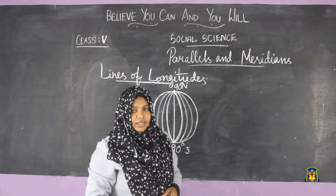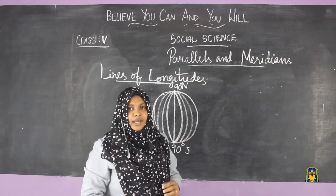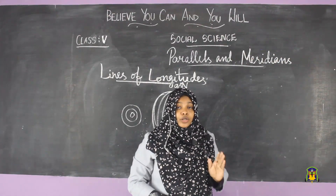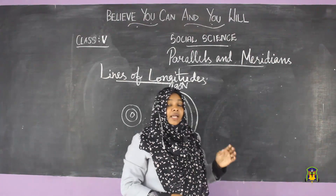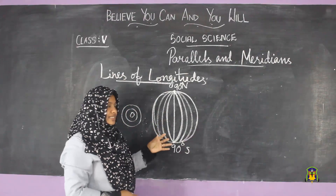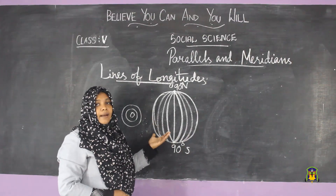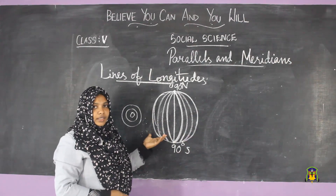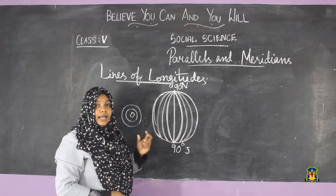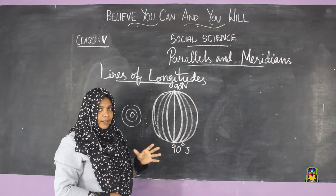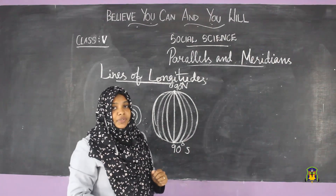The third fact: longitudes do not run parallel to each other. They are not at an equal distance. Check the diagram, children — the meridians are not at an equal distance from each other. Latitude lines are at an equal distance from each other, but longitude lines are not.